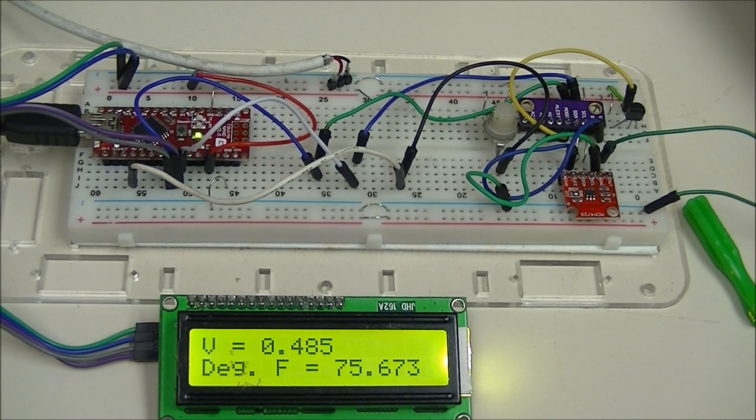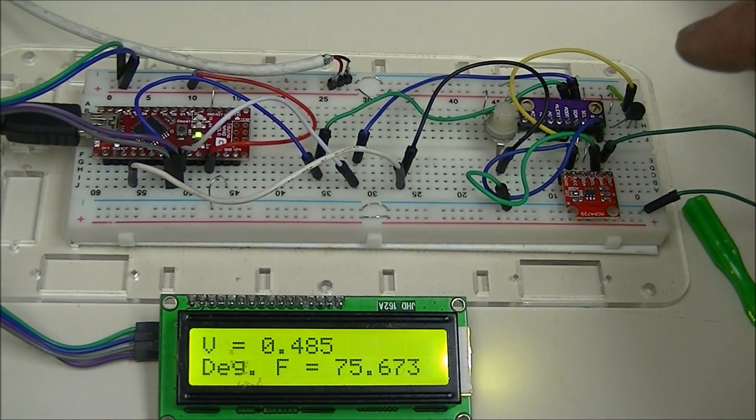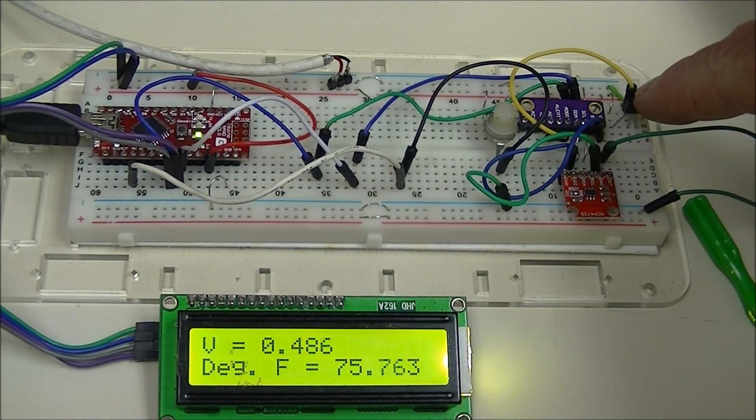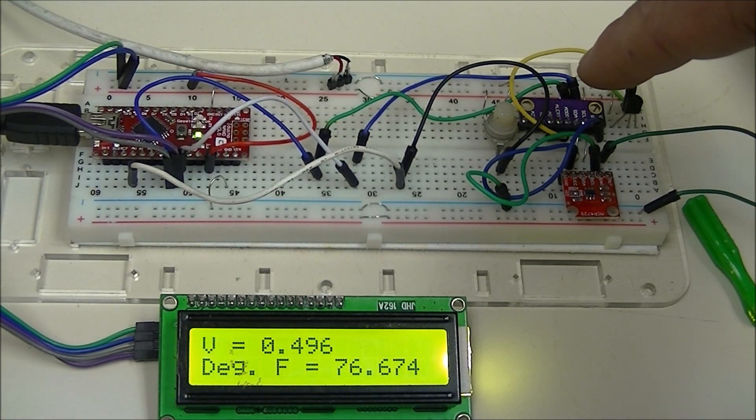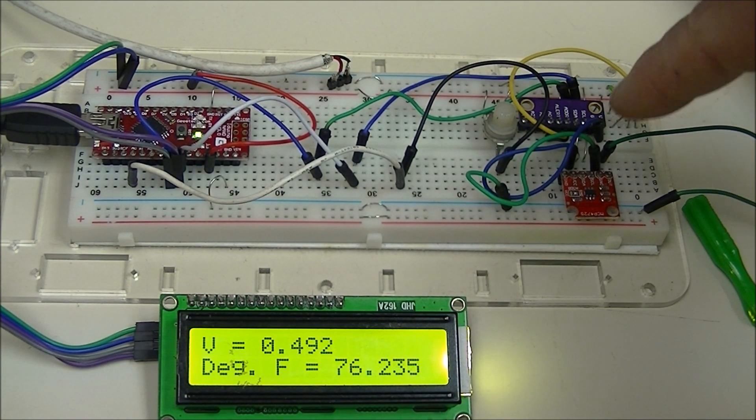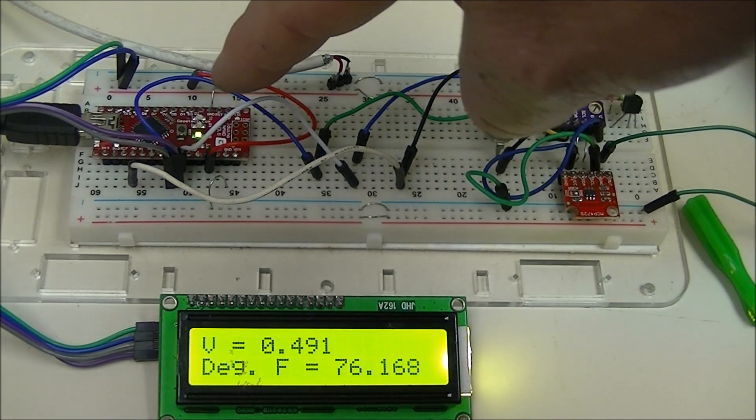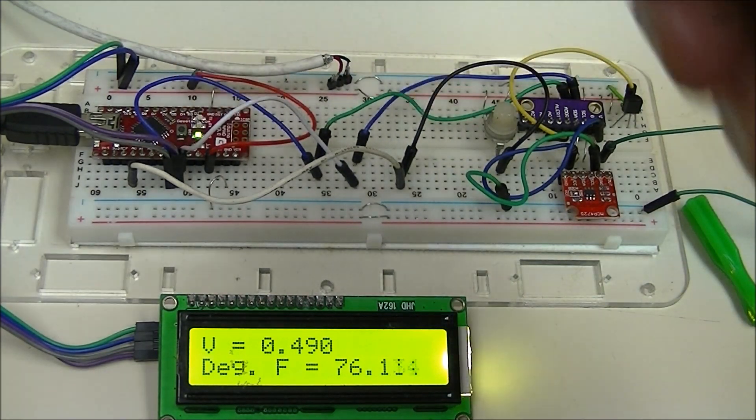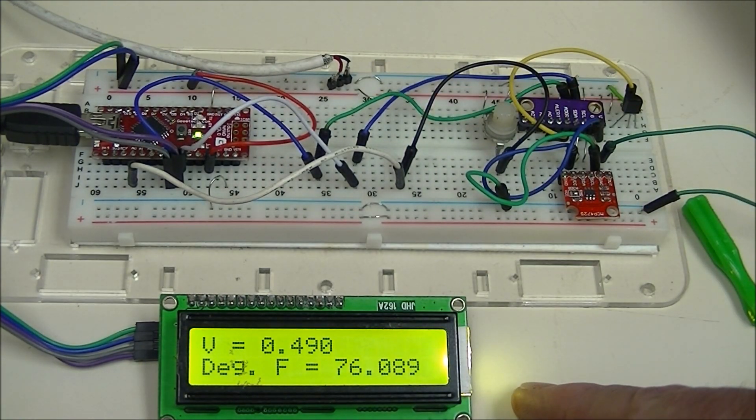Pictured here is just another Arduino project, this is a TMP37 centigrade temperature sensor, this is an ADS1115, 15 bit analog to digital converter. This is an Arduino Nano, and this is an I2C LCD display.